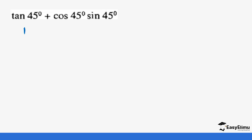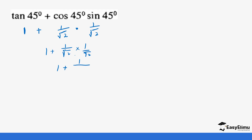So: tan 45 plus cos 45 times cos 45. Tan 45 is 1, and cos 45 is 1 over root 2, multiplied by 1 over root 2. So this means 1 plus 1 over root 2 times 1 over root 2, which is 1 plus 1 over root 4 — root 2 times root 2 gives us 2 — so 1 plus 1 over 2, which gives us 1 and a half.